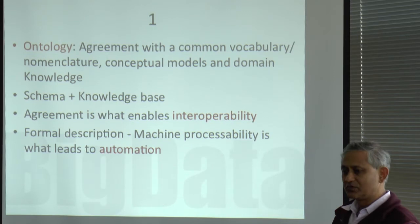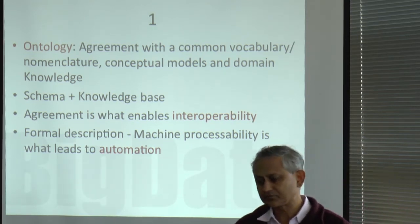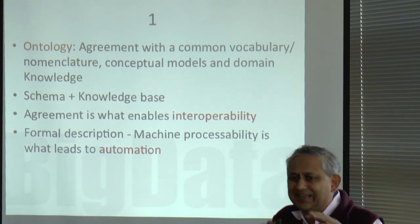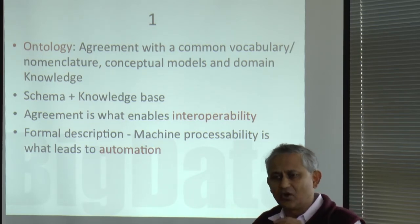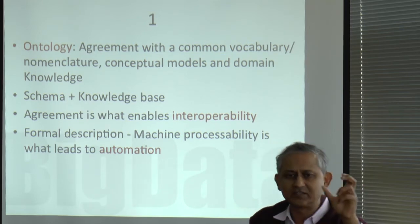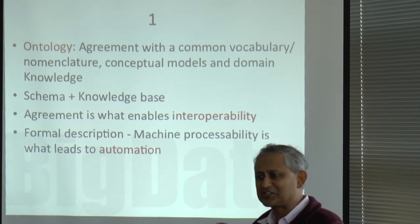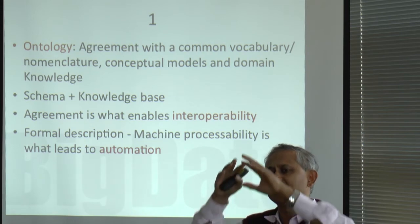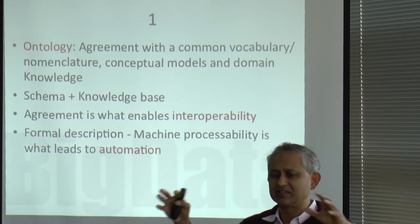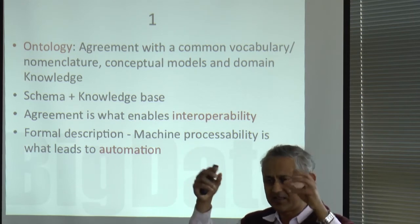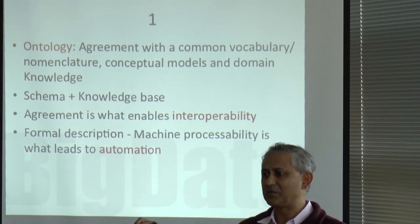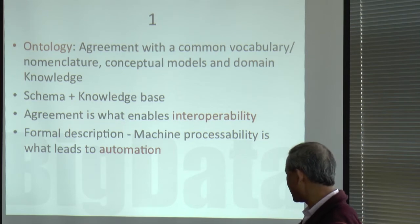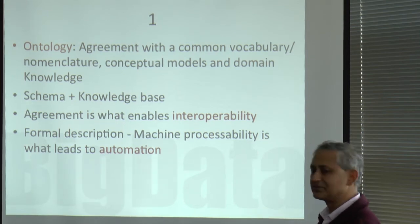Number one is ontology — an agreement with common vocabulary, nomenclature, concepts, and so on. It typically consists of schema and knowledge, or description and description base, or intensions and extensions. Basically there is schema and concept description with common interpretation, and then instantiation of it — the basic known facts. This agreement enables interoperability. We interoperate at the natural language basis; years of training in language give the common basis with which we reach agreement.